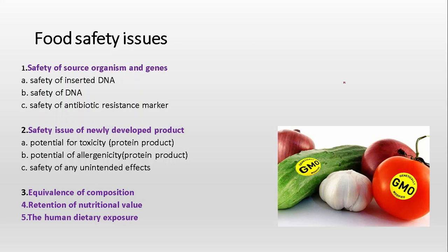The fifth point is human dietary exposure — how much desired product is produced by the gene in a genetically modified plant, and how much is absorbed and retained by the human body. The amount should be accurate as required. When we cook and eat food, some vitamins are absorbed and some are eliminated, so we should check whether the amount absorbed is sufficient or excessive, since it can hinder the absorption of other minerals and vitamins.